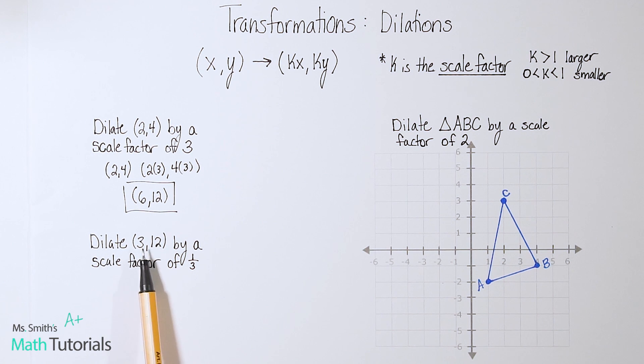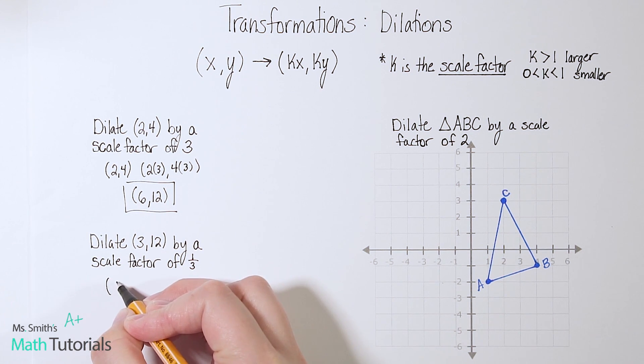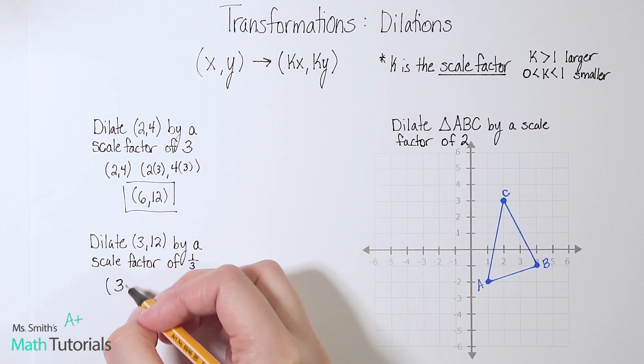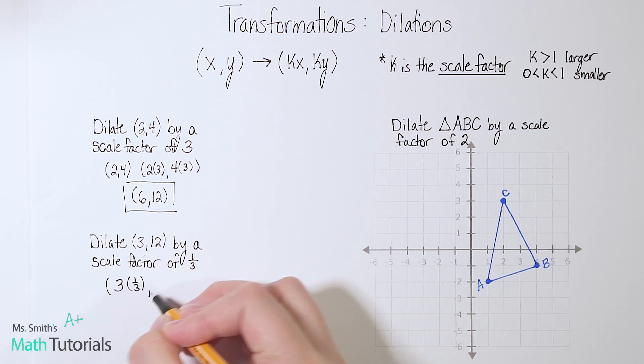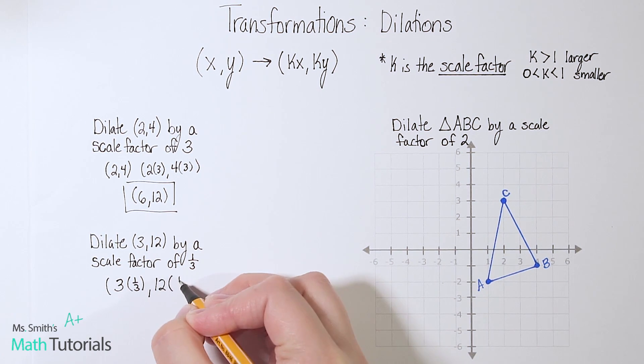Now let's try this one. Dilate (3,12) by a scale factor of one third. So we're going to take that original point, (3,12). We're going to take the 3 and multiply it by one third, and we're going to take the 12 and multiply it by one third.